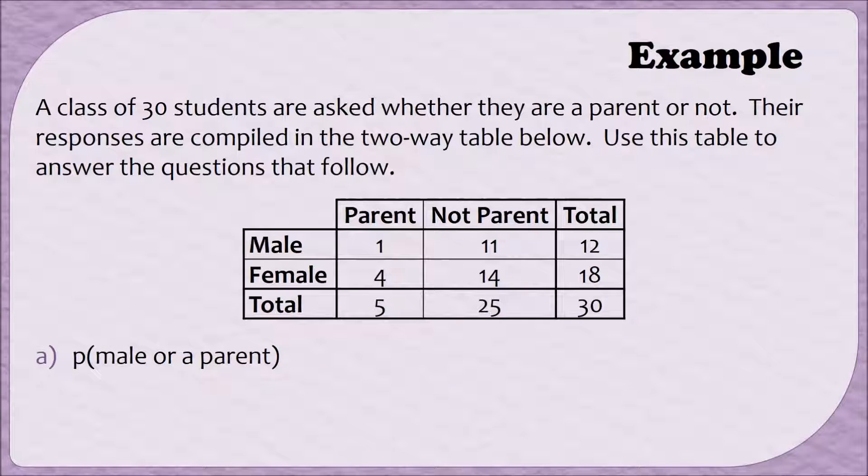Find the probability that a person is a male or a parent. Since our connecting word here is OR, we need to count up all of the people who satisfy one or both of these conditions. For example, there are 11 people who are male and who are not a parent, so these 11 people satisfy the male condition, but not the parent condition. These 4 people are a parent, but they are not male, so these 4 people satisfy the parent condition. And there is one person who is both male and a parent, so they satisfy both conditions.